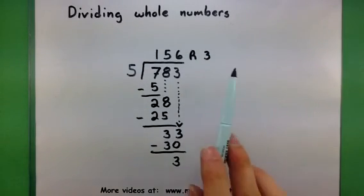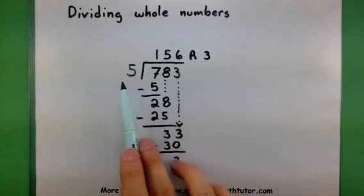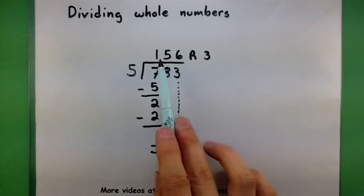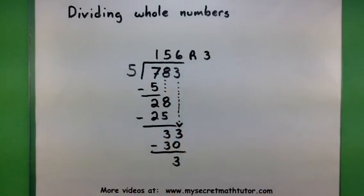So now what this says is that when you take 783 and you divide it by 5, your answer is 156 with a remainder of 3.